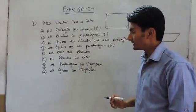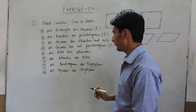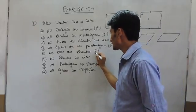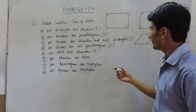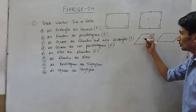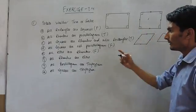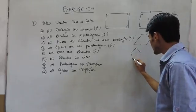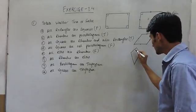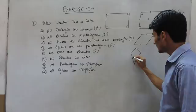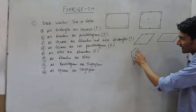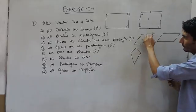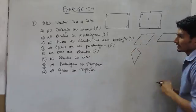In statement E, all kites are rhombuses. This is again a false statement because a rhombus is a figure whose all sides are equal, but a kite is a figure whose only two adjacent sides are equal. So a kite has only adjacent sides equal, but in a rhombus all sides are equal.